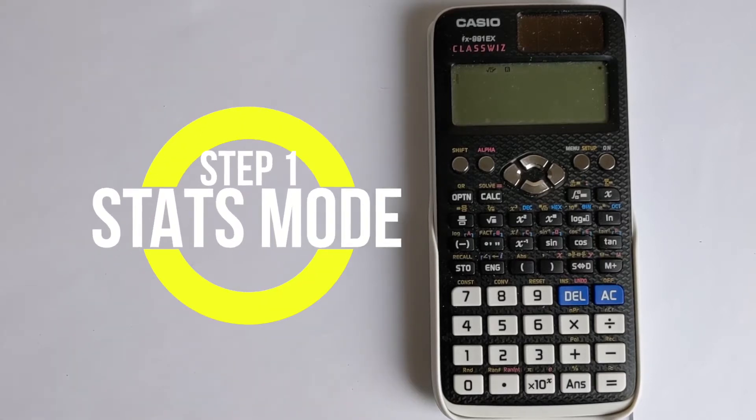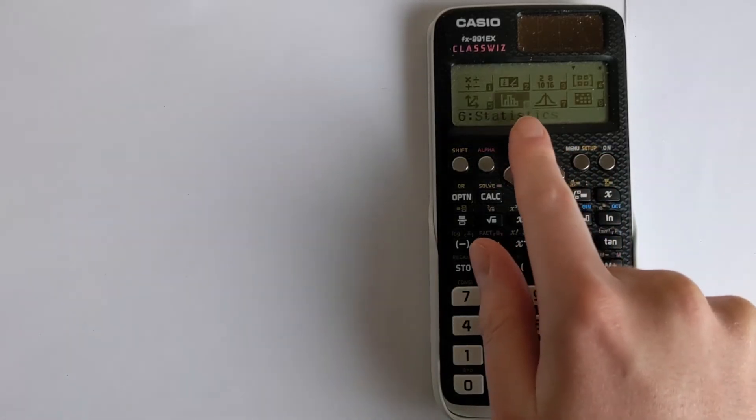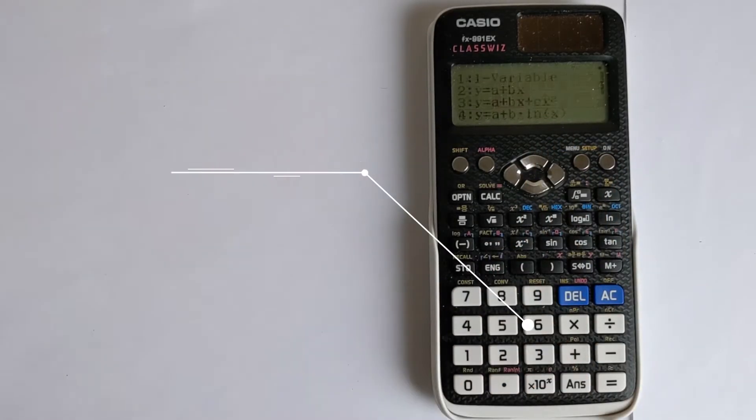And you do this by first putting your calculator into the stats mode. So you press menu, and then you're looking for option 6, so we can press number 6, and that puts you into statistics.